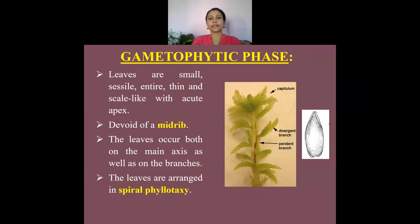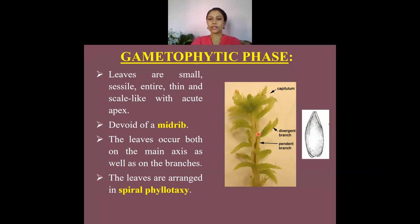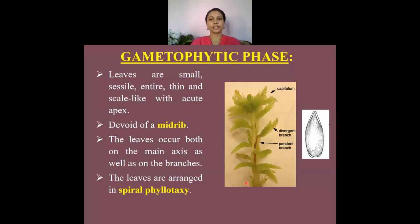The leaves in the gametophytic phase are very small and sessile, meaning they do not have a stalk. They are scale-like with an acute apex and a broad base. A characteristic feature is that the leaves are devoid of a midrib. Leaves are present on both the main axis and the branches — both divergent and pendant — arranged spirally, a pattern known as spiral phyllotaxy.